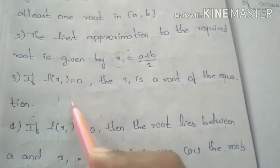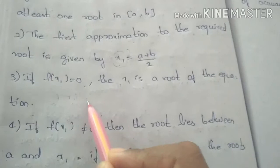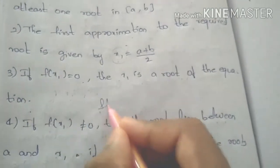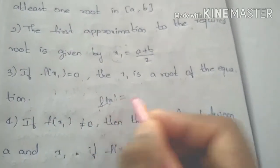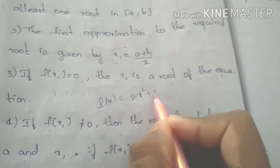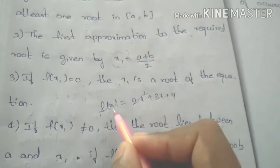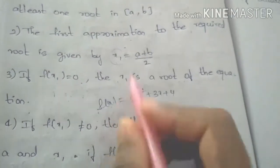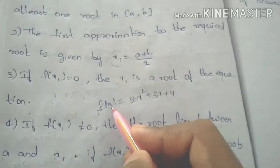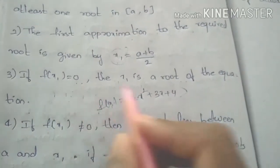We find the value of f of x1. Here is an example equation: f of x equals 2x squared plus 3x plus 4. If we substitute x1's value into this equation — for example, substituting x equals 0 — we evaluate the function at that point.